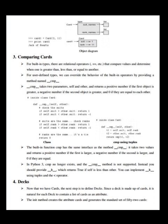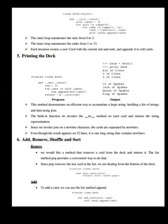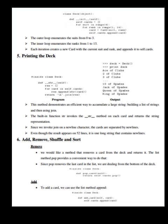Now let us see decks. Now that we have cards, the next step is to define decks. Since a deck is made up of cards, it is natural for each deck to contain a list of cards as an attribute. The init method creates the attribute cards and generates the standard set of 52 cards. The outer loop enumerates the suits from 0 to 3. The inner loop enumerates the ranks from 1 to 13. Each iteration creates a new card with the current suit and rank and appends it to self.cards. For printing the deck, this method demonstrates an efficient way to accumulate a large string by building a list of strings and then using join. The built-in function str invokes the __str__ method on each card and returns the string representation. Since we invoke join on a newline character, the cards are separated by newlines.